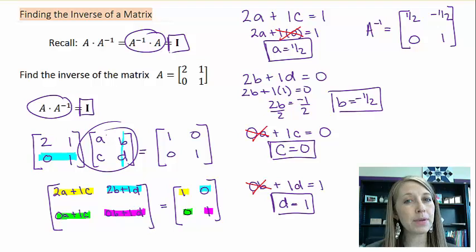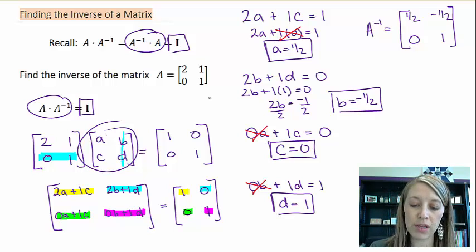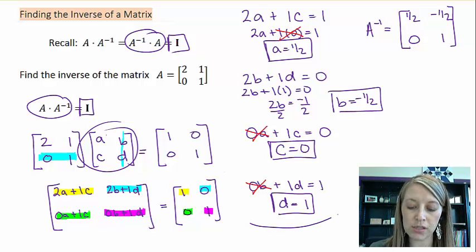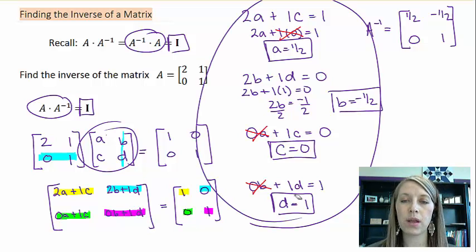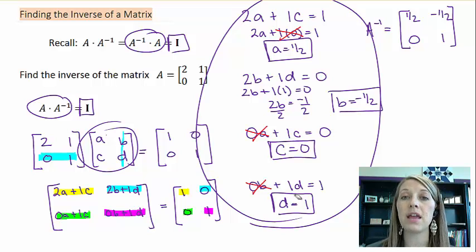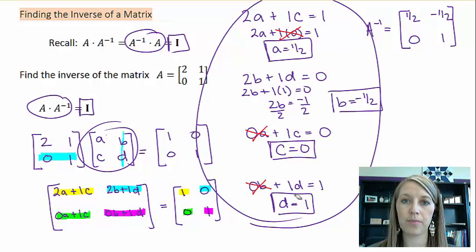This example is straightforward — we just use properties of matrix multiplication and matrix equality to find the inverse. But what happens with more complicated matrices where the equations aren't so nice? That's what the next video will show: how to find a matrix inverse when it's not easy to set up in this format. Thank you.